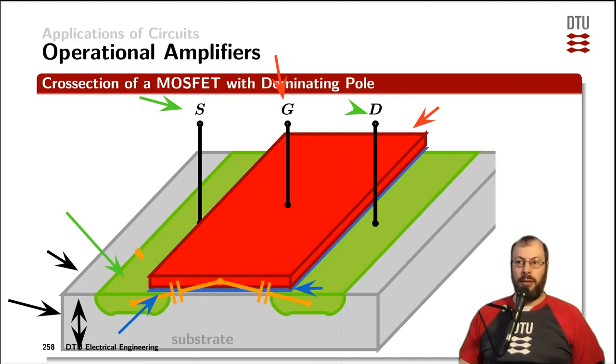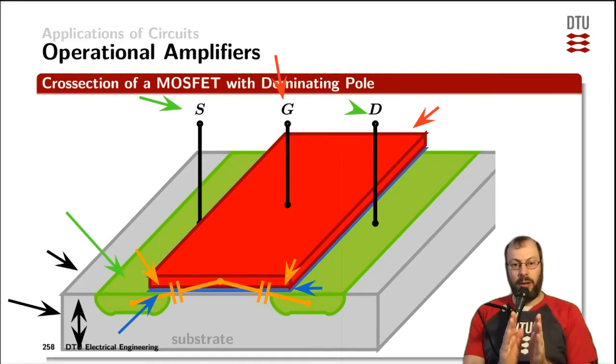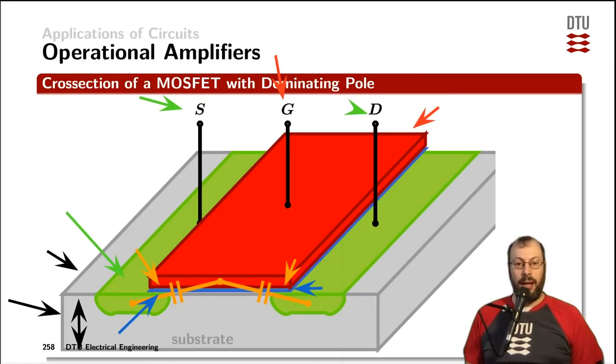Now, as the gate is having a surface right above the wells here and there, there is actually two surfaces on top of each other, so a gate-to-source surface and also a gate-to-drain surface. These surfaces are constructing the parasitic capacitors that show up as the dominating pole in our operational amplifier circuit.